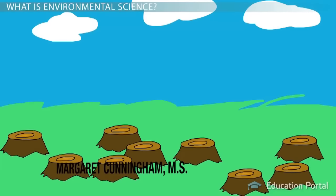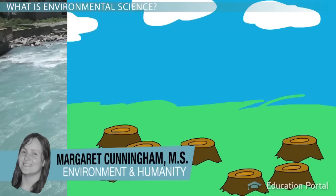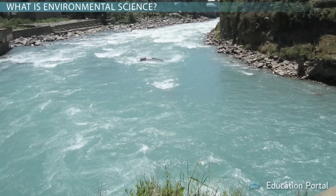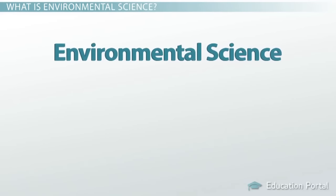What do you think would happen if all of the trees in the rainforest were cut down, or if chemicals were spilled in a river, or if snow and rainfall increased drastically? These are some of the many topics that are studied in the field of environmental science.